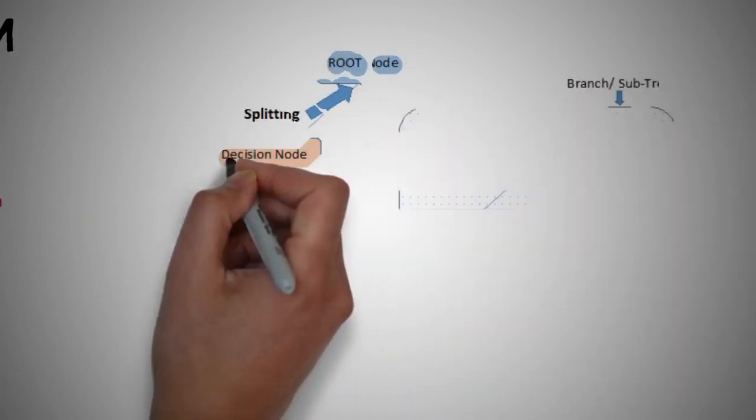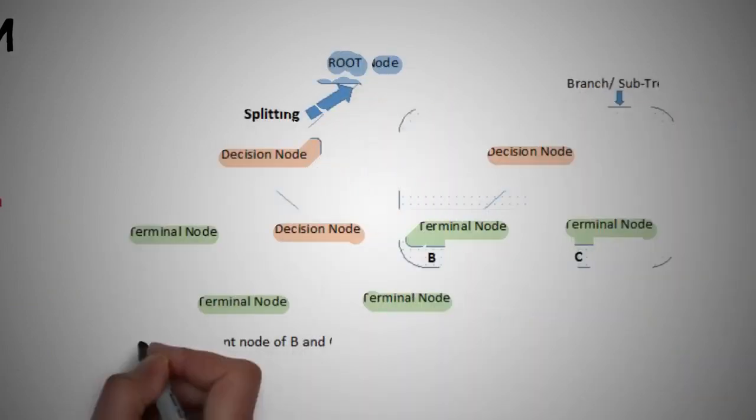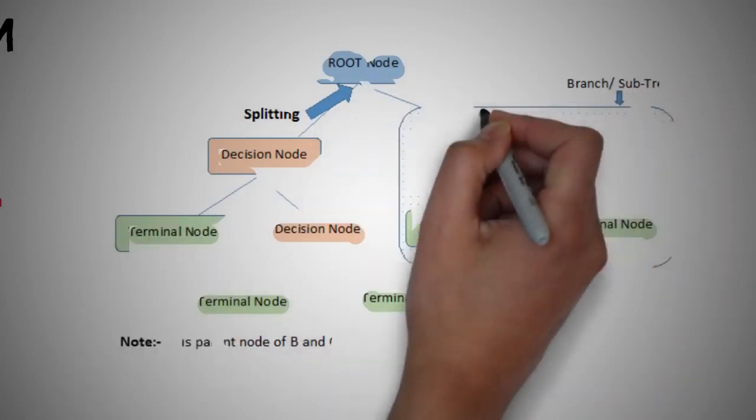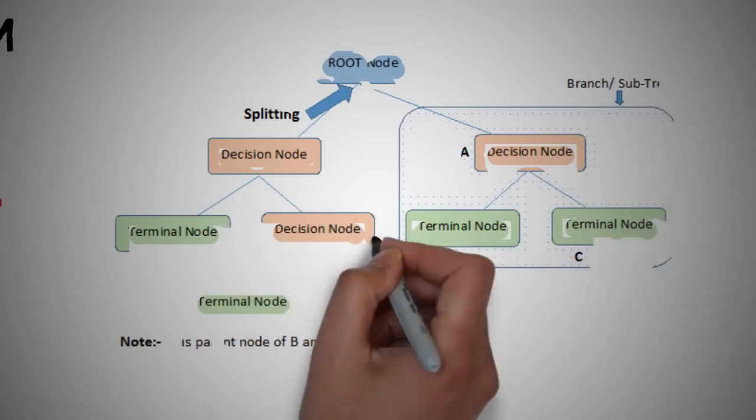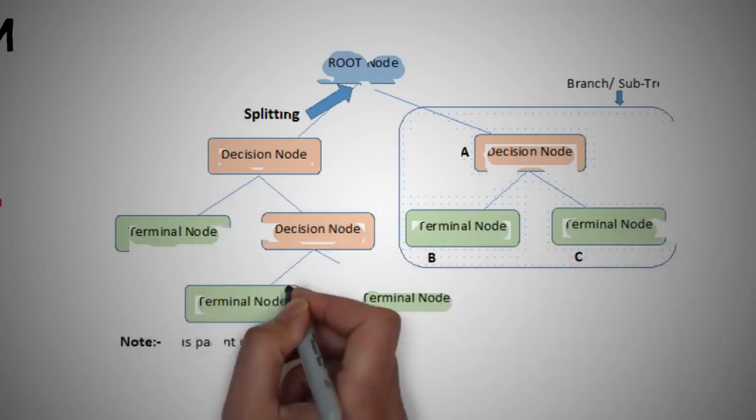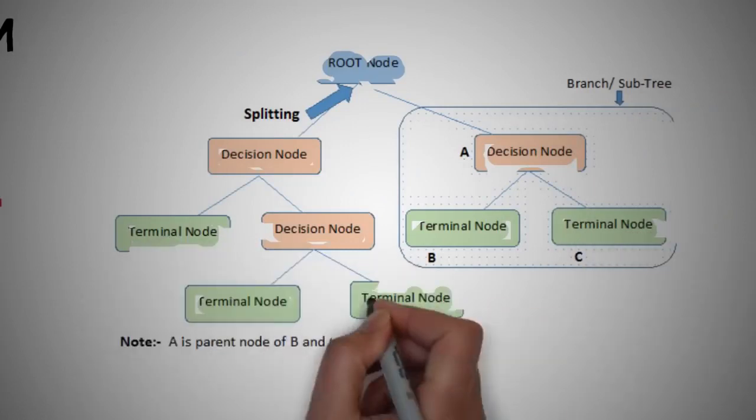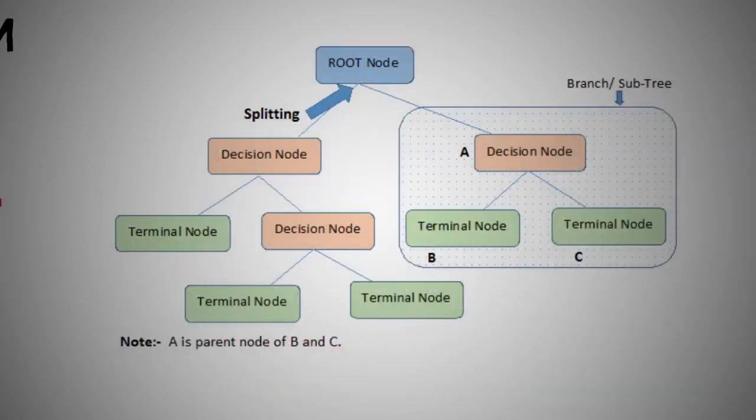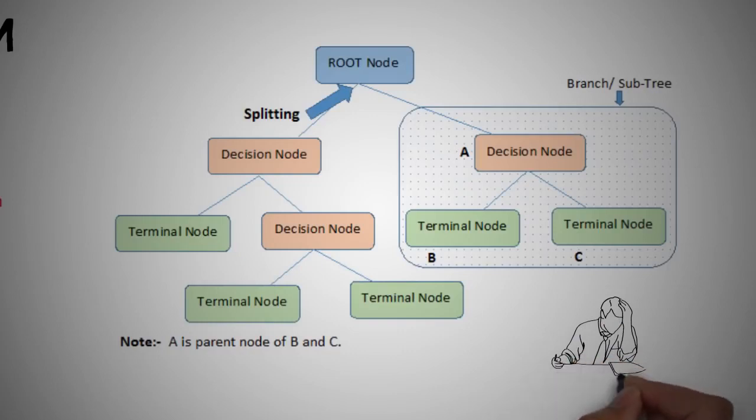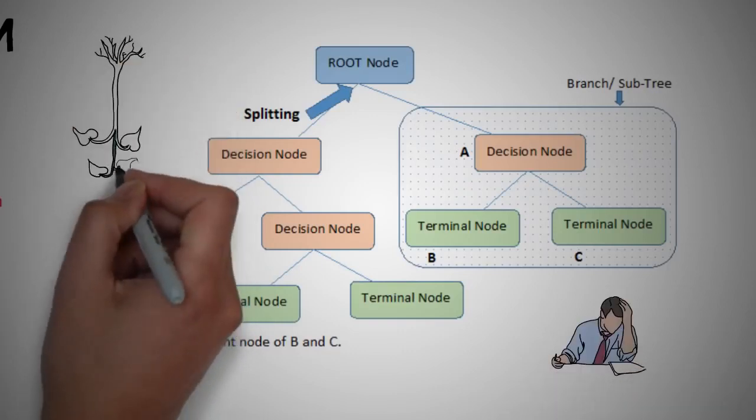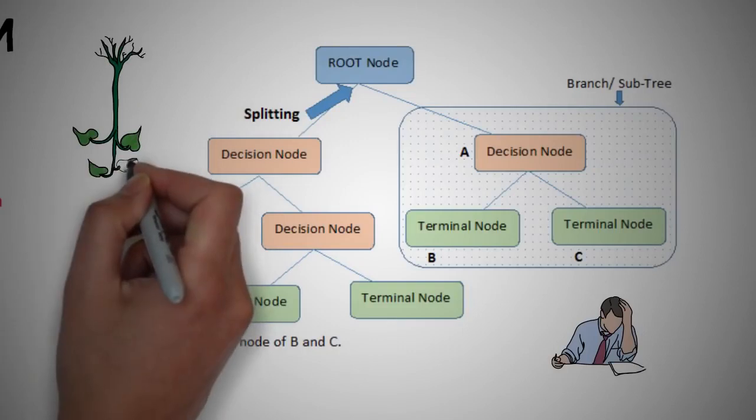So a decision tree is a flowchart-like structure where each internal node denotes a test on an attribute, each branch represents an outcome of a test, and each leaf or terminal node holds a class label. The topmost node in a tree is the root node. In decision analysis, a decision tree can be used to visually and explicitly represent decisions and decision making. As the name goes, it uses a tree-like model of decisions.